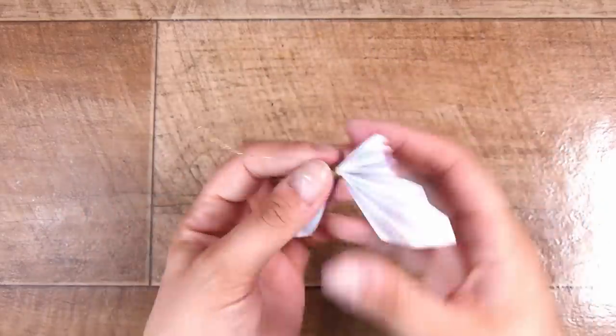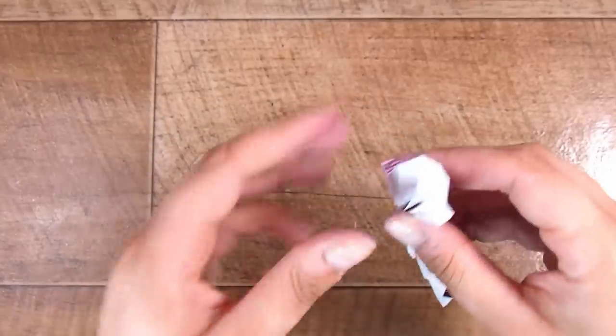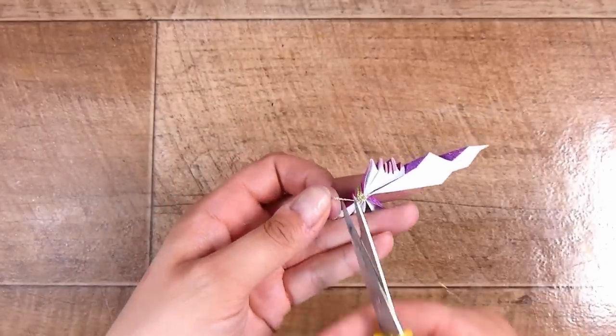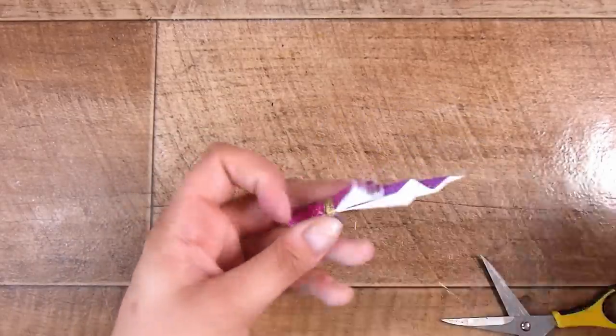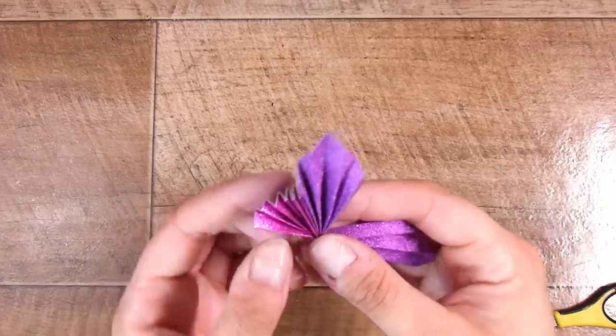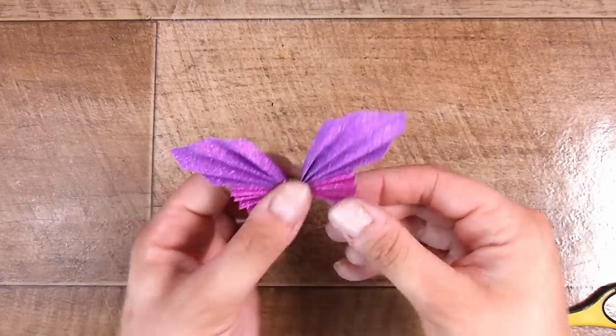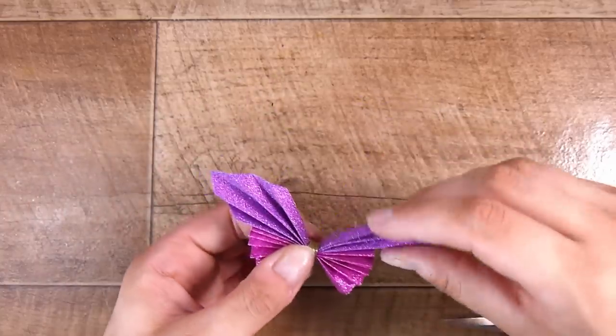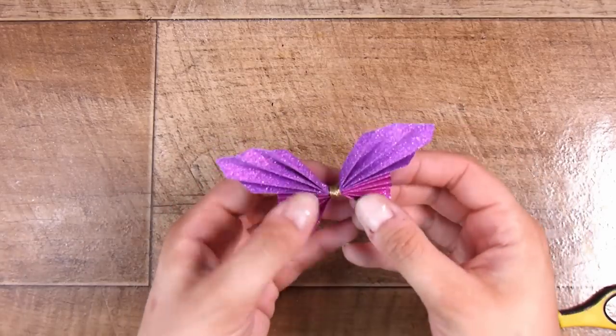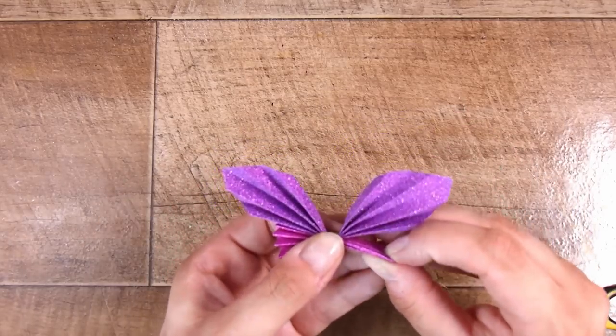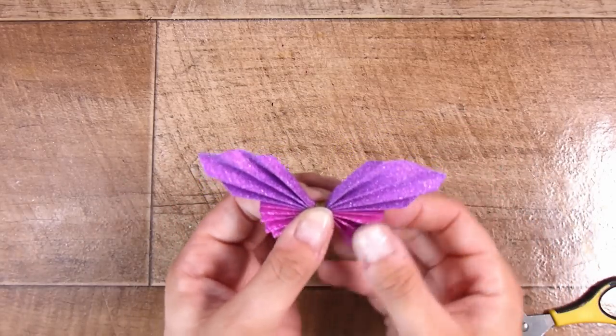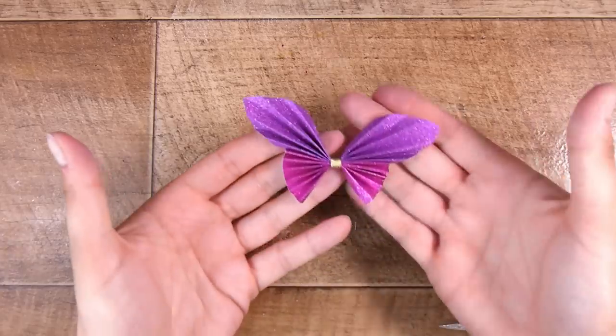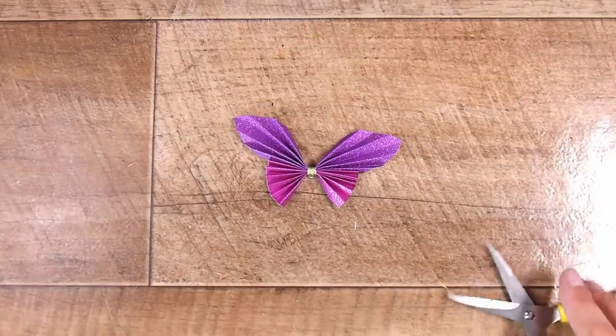Perhaps if you have children or grandchildren or you volunteer at a school or a kindergarten or something like that, then this could be one of those activities that would be fun to do even on a rainy day or if you have some time inside. My card today is going to be very handmade because I had a picture of what I wanted in my head. Here is the kind of finished butterfly for now and you can kind of move it around and adjust it.